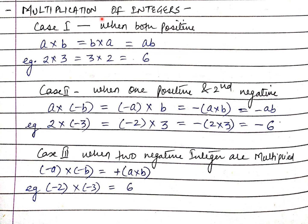Now, today's topic: multiplication of integers. Although I have given you a hint of this already in the first class, let us take this topic because it is coming in the continuation. In the multiplication of integers there are some cases. Case 1: when both numbers are positive. I have taken an example — suppose A and B are integers. A into B is same as B into A, equal to AB, by the property of commutativity. Suppose A is 2 and B is 3: 2 into 3 is same as 3 into 2, and the answer is plus 6. So when both numbers are positive, the answer is positive.